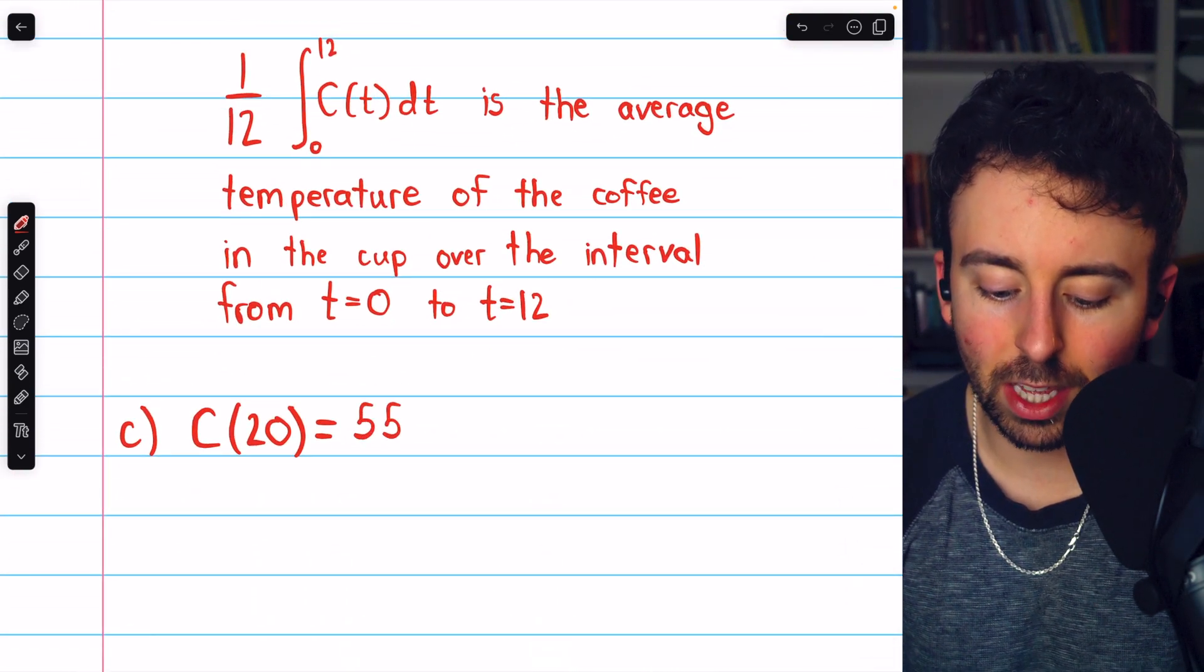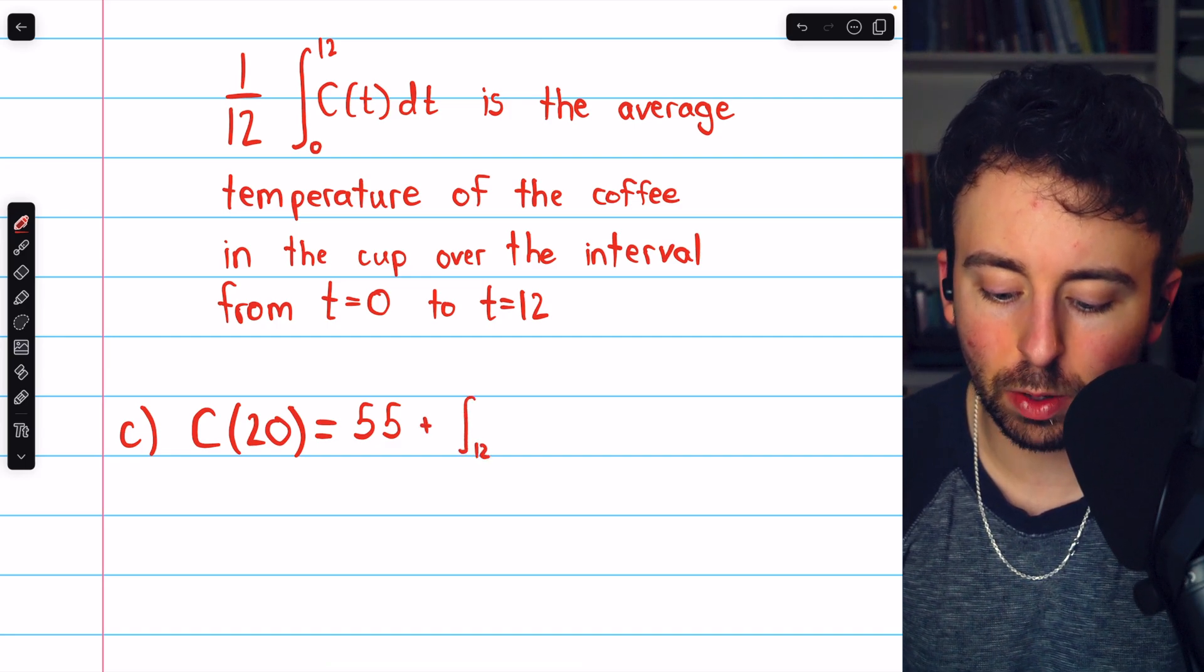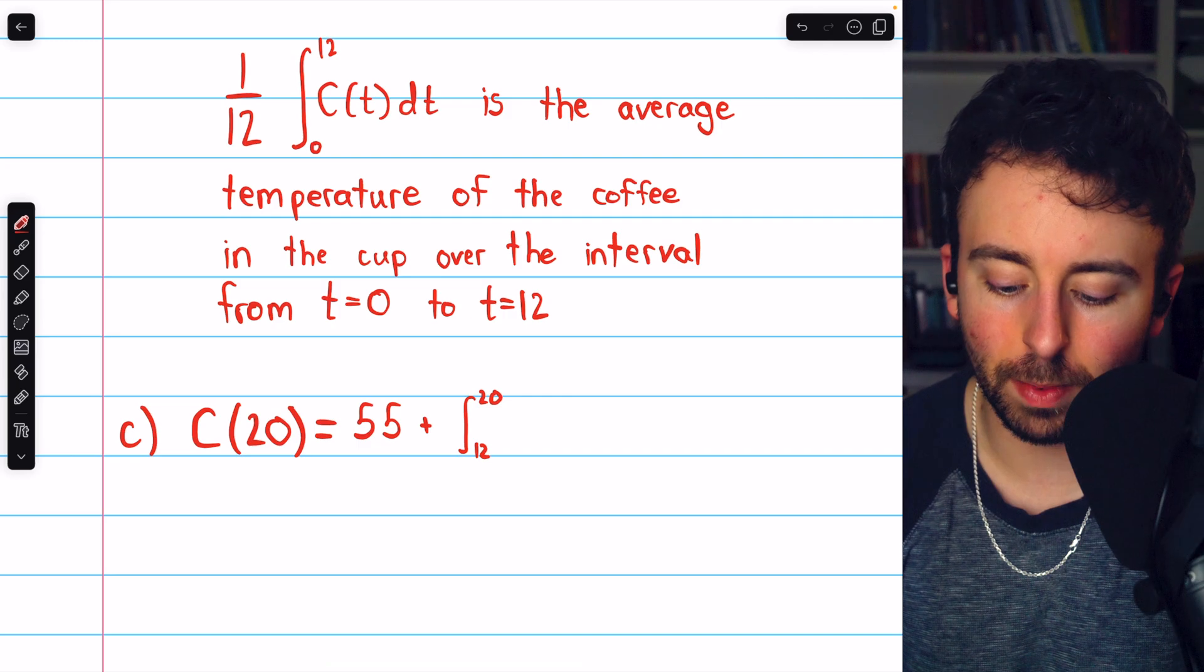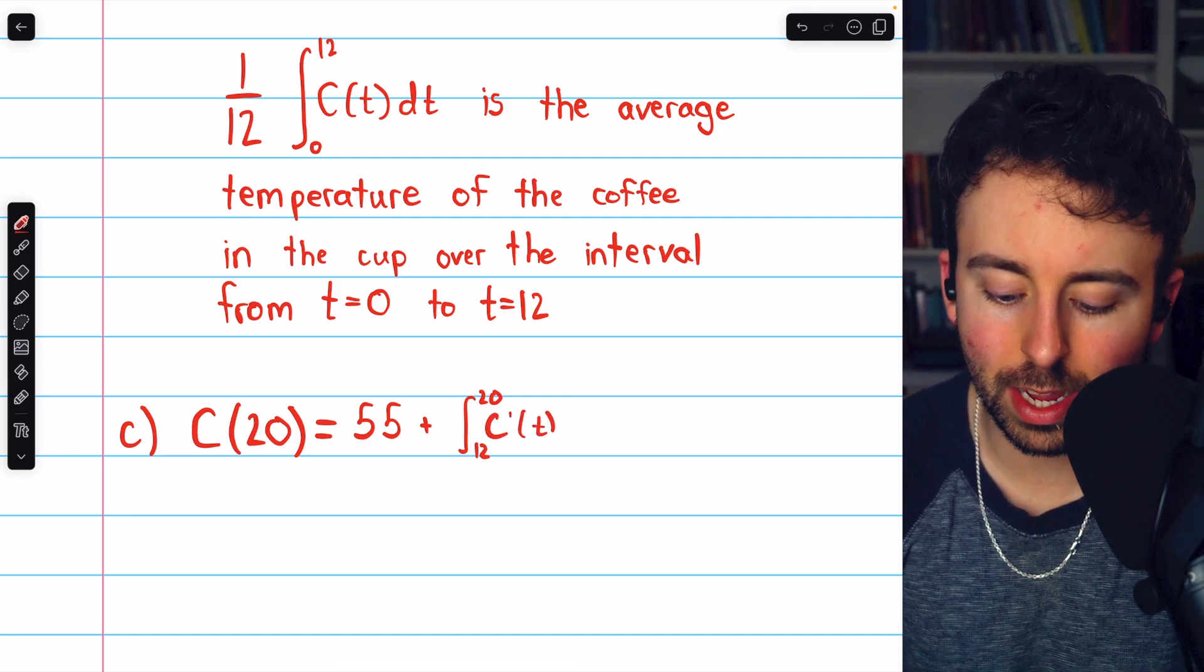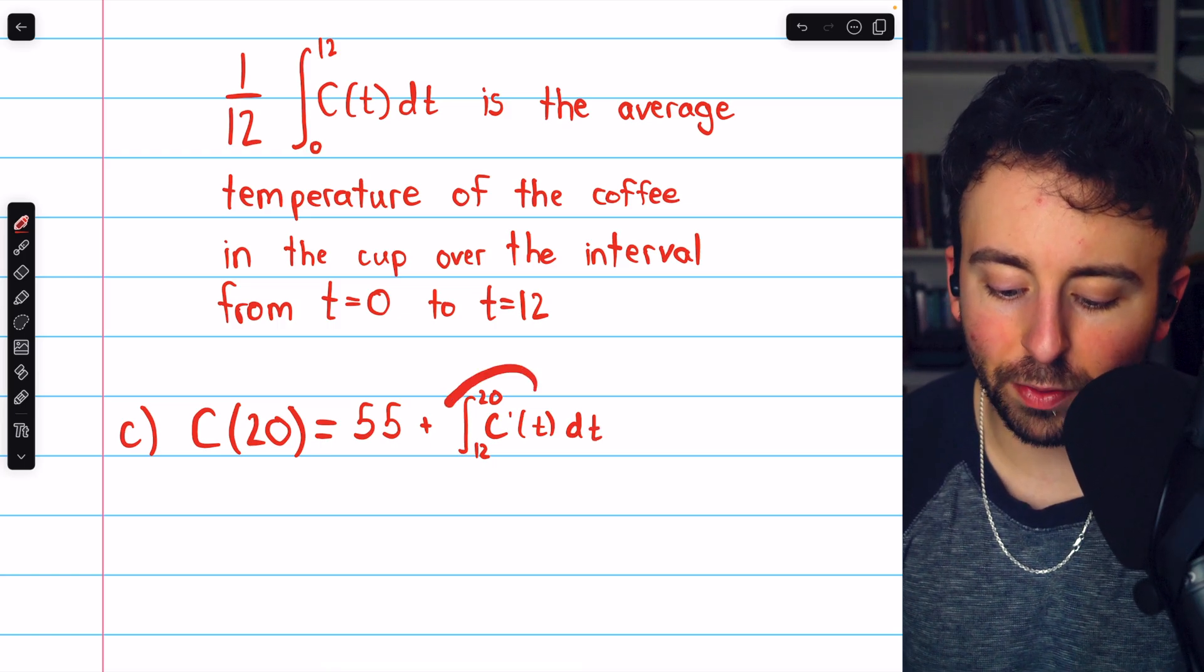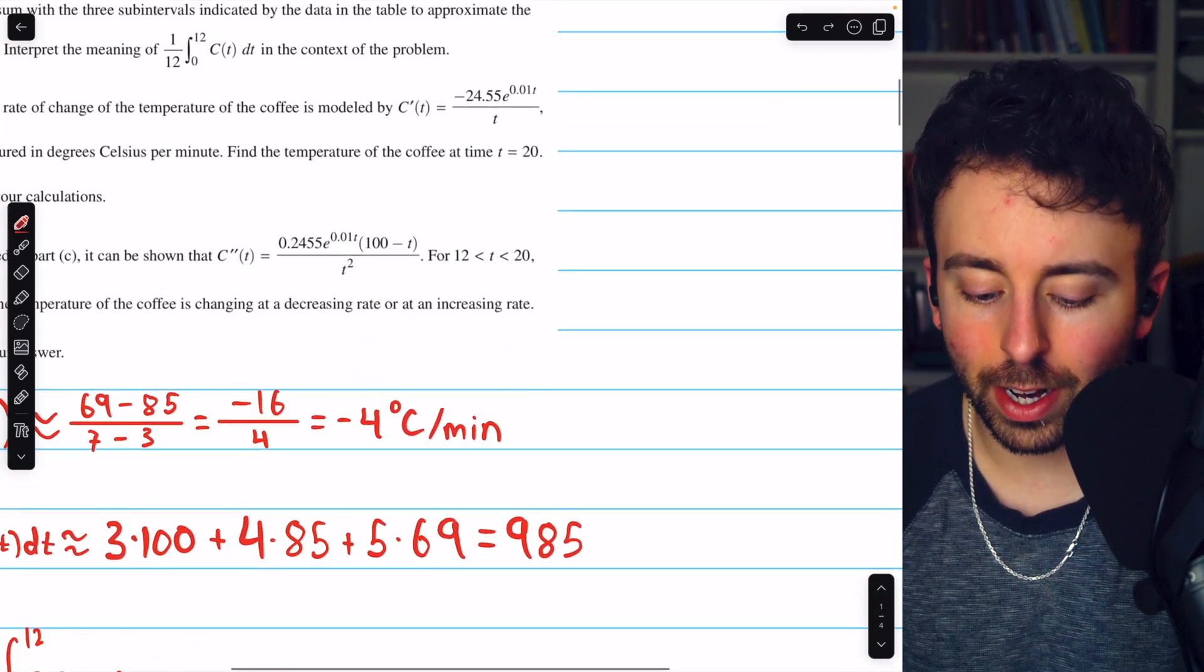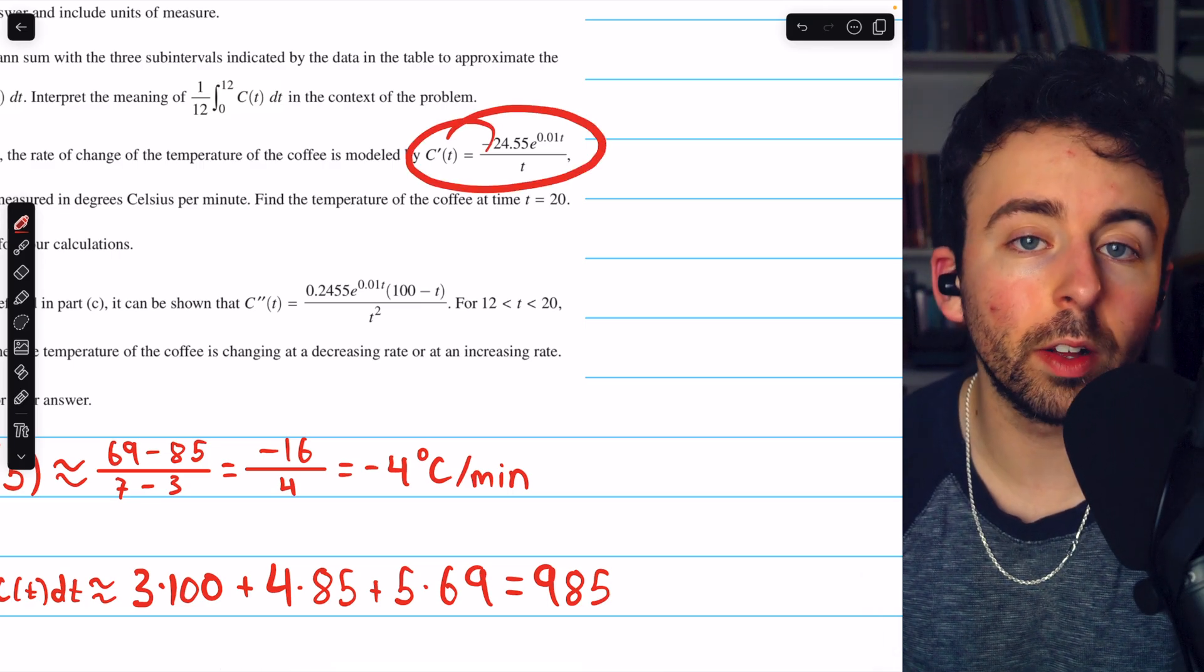And then we will accumulate the rates of change from that time at t equals 12 up to the desired time at t equals 20. We're going to integrate c prime of t, which is given to us. So we'll use a graphing calculator and integrate this given derivative from t equals 12 to t equals 20.